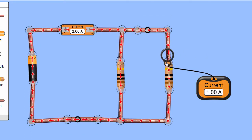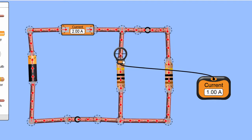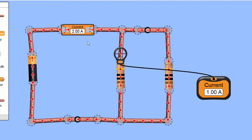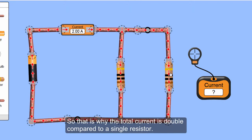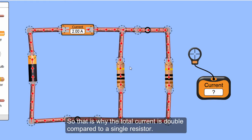I can show you the same. Over here, this is 1 ampere. This is also 1 ampere. But of course, if you add up this 1 ampere and 1, you get 2. So that is why the total current is doubled as compared to a single resistor.